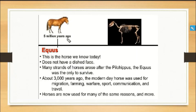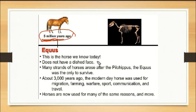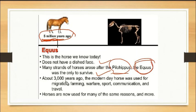Equus is the modern day horse. The horse evolved about 1 million years ago. It does not have a dished face. About 3,000 years ago, the modern day horse was used for migration, farming, warfare, sports, communication, and travel. This was the most important period for the horse.